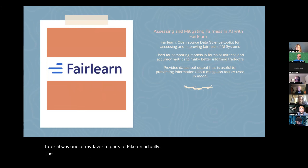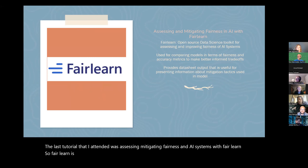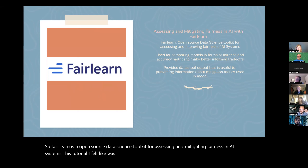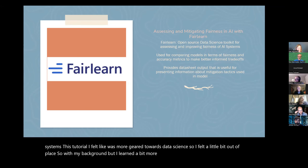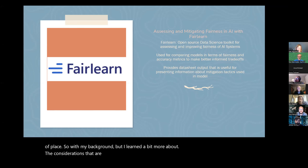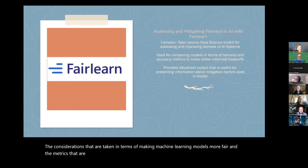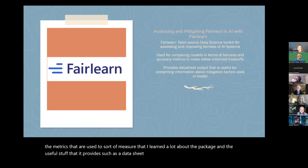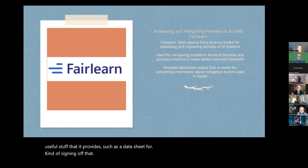The last tutorial I attended was assessing and mitigating fairness in AI systems with Fairlearn. Fairlearn is an open source data science toolkit for assessing and mitigating fairness in AI systems. I felt it was more geared towards data science so I felt a little out of place with my background, but I learned more about the considerations in making machine learning models more fair and the metrics used to measure that. I learned about the package's useful features, such as a data sheet for signing off that mitigation factors have been used.